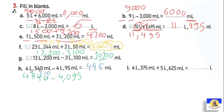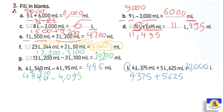Letter i: 4 liters 375 mL plus 5 liters 625 mL. Convert: 4375 + 5625. Five plus five equals ten, carry one. Seven plus two plus one equals ten, carry one. Three plus six plus one equals ten, carry one. Four plus five plus one equals ten. Answer: 10,000 mL. Since the question asks for liters, convert: 10,000 mL = 10 liters. Important: always check whether the answer is needed in liters or milliliters.